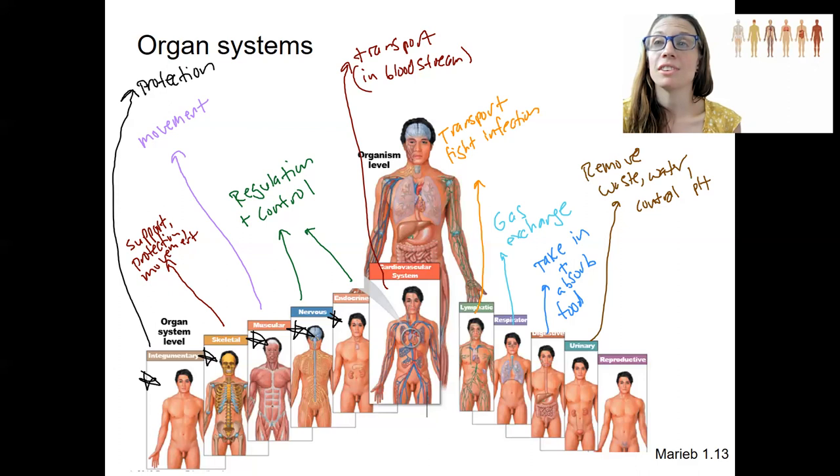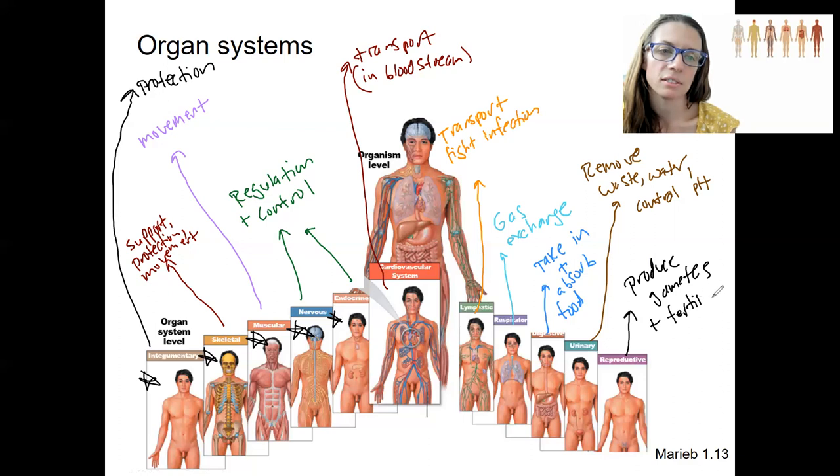And lastly, reproductive. Obviously, to reproduce. So another way of saying that is to make, produce gametes, sex cells, to form new offspring. And fertilize. For reproduction. And the reproductive systems actually have to put a lot of effort into making special cells and doing lots of special stuff.